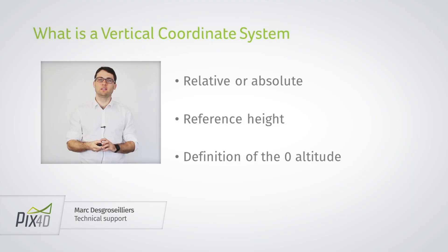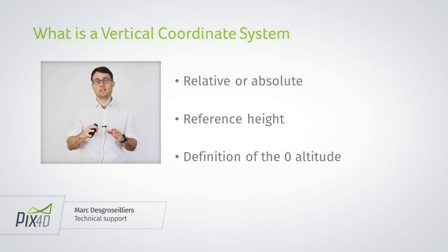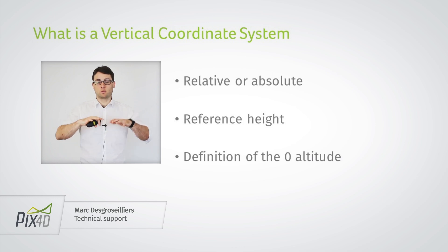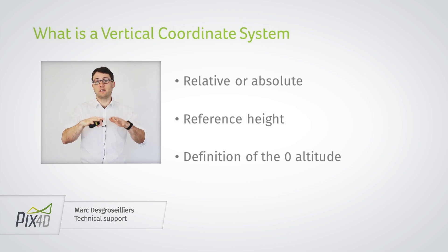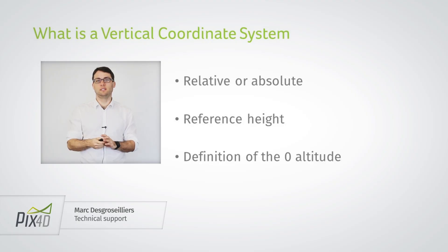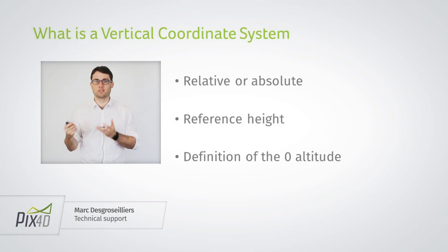You can also do it in an absolute way. This would require you to define a baseline height — a height at which the altitude you decide is zero. And this is what a vertical coordinate system does.